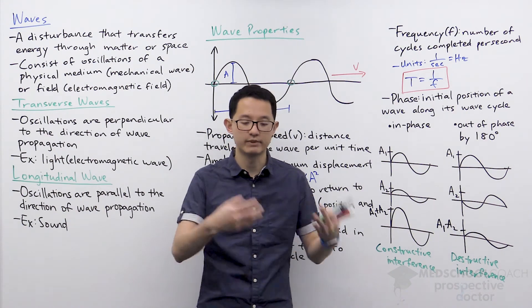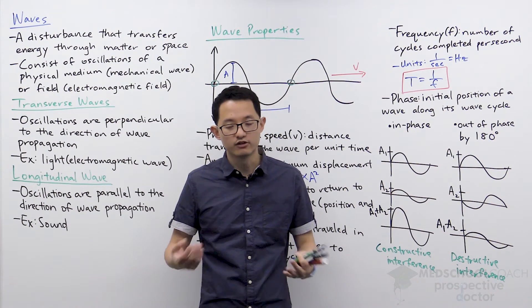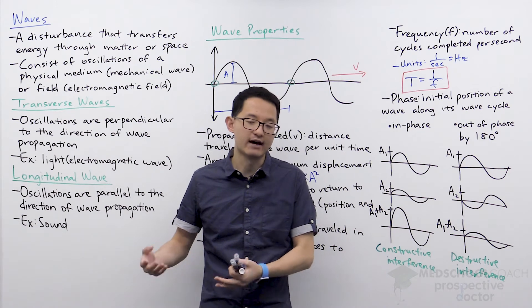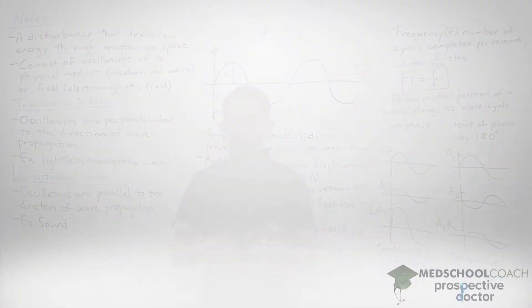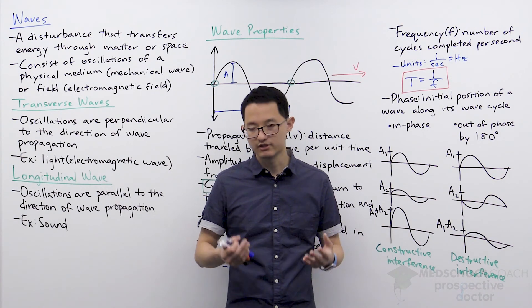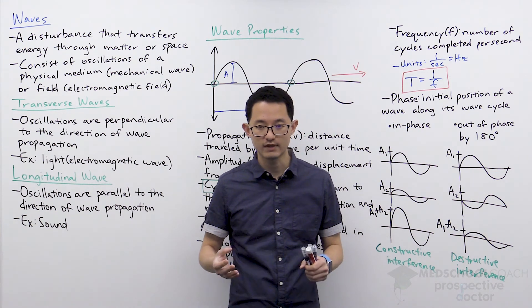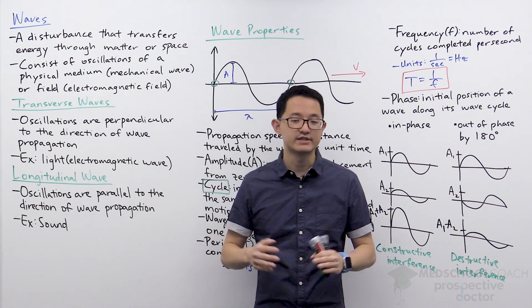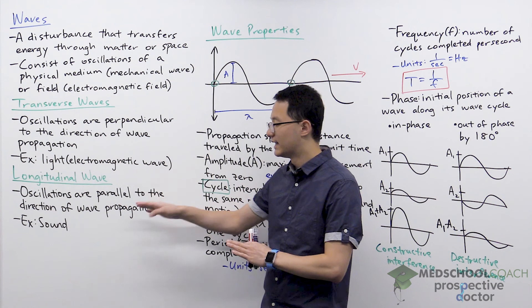You can also be 90 degrees out of phase — one quarter of a cycle off. In this case, some parts of the wave experience constructive interference while others experience destructive interference, making it more complex. That's what you need to know about waves for the MCAT. In subsequent videos, we'll look in more detail at both light and sound.